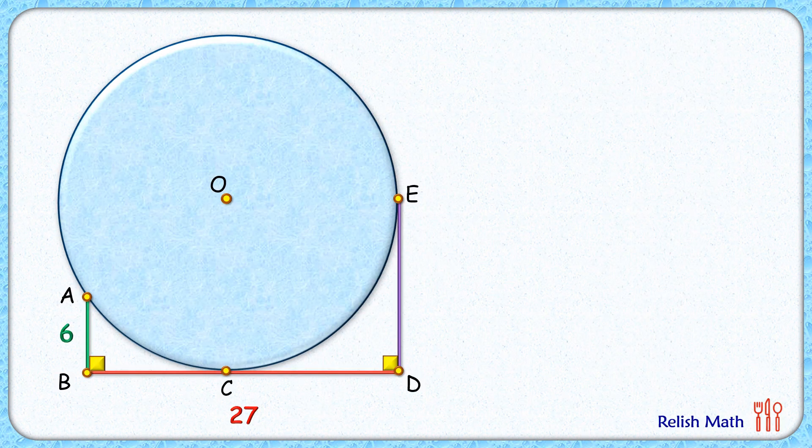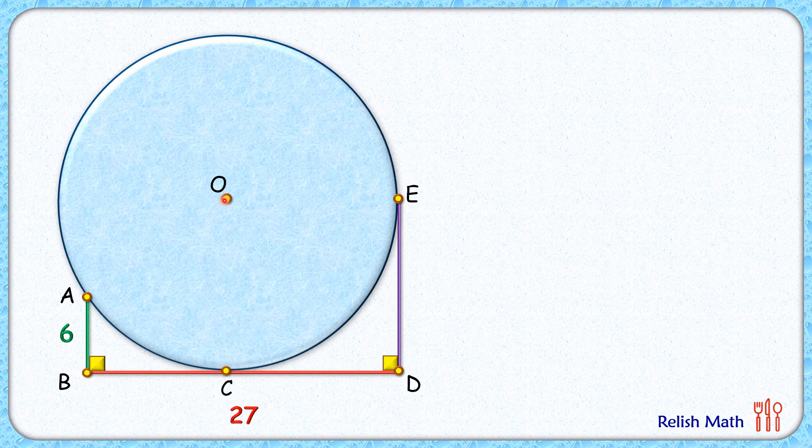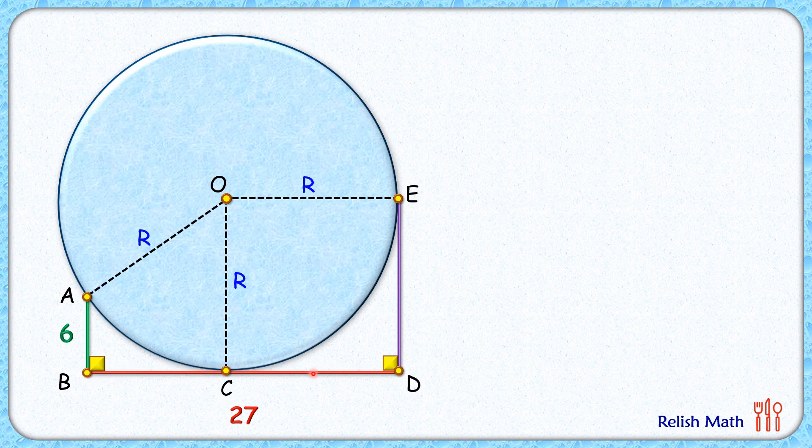Let's check this simple and elegant solution. Let's start by assuming the radius of the circle as R centimeters. As BD is tangent, it will be perpendicular to the radius. By the same logic, angle E here is 90 degrees.